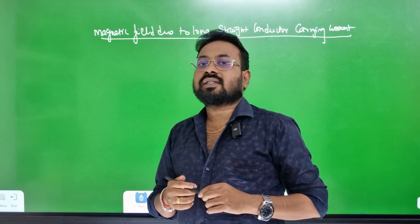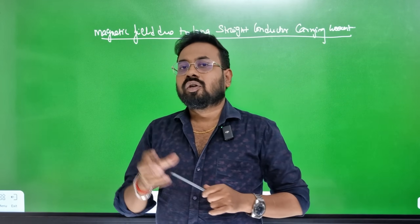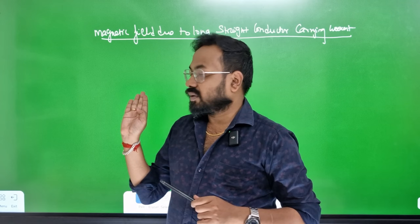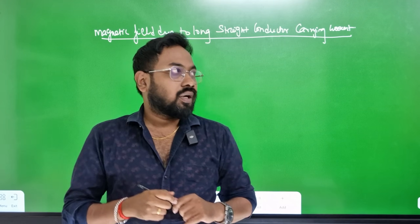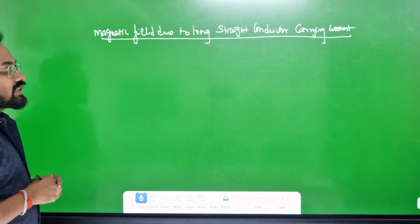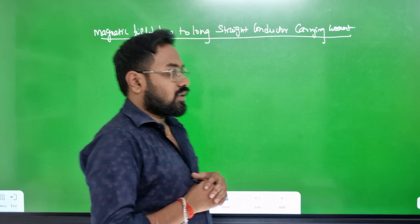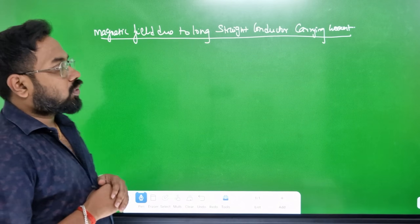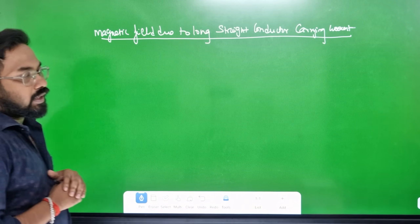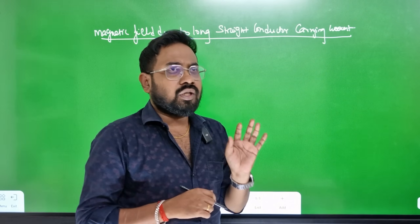On day 3, in unit 3, there is a long straight conductor carrying current. How do we calculate the magnetic field due to a long straight conductor? Let's look at this question.